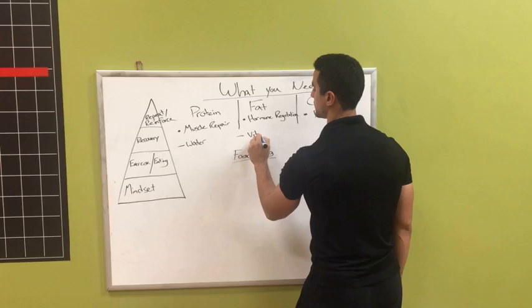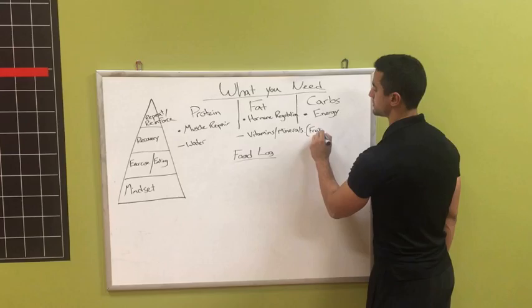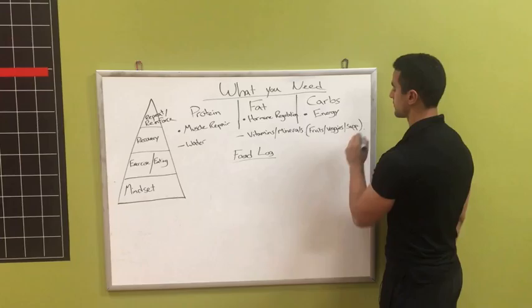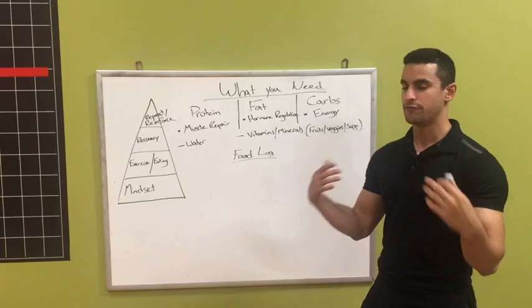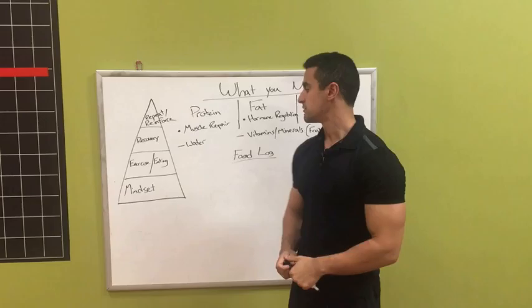We also want to make sure that we have water. Water is important. And then of course we're looking at vitamins and our minerals. This will usually be in the form of maybe fruits, vegetables, or maybe even some form of supplement. So when we're looking at the food that we're having, we're looking for something like this, making sure there's some sort of balance between all of this.